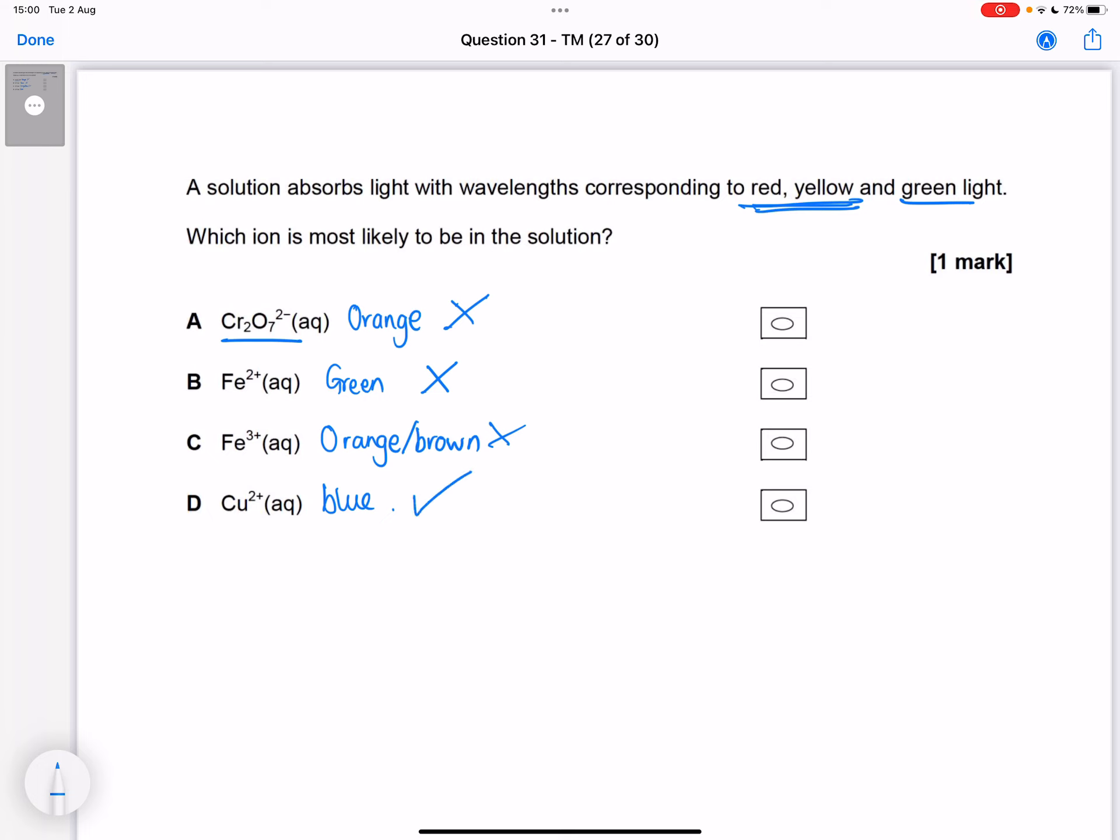So something that appears blue could be absorbing red, yellow, and green and transmitting the blue parts of the spectrum. So the answer is D.